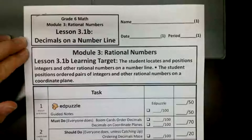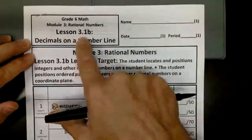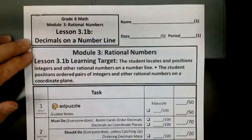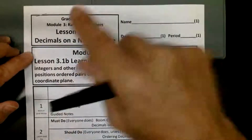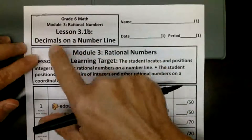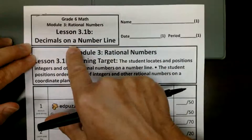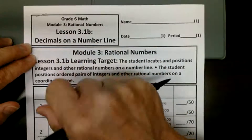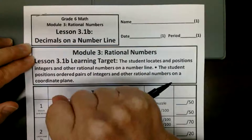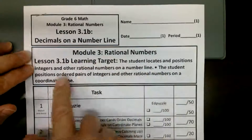Hi, this is Ms. Smith, and we are on Lesson 3.1B today. Lesson 3.1A was called Fractions on a Number Line. 3.1B is Decimals on a Number Line.